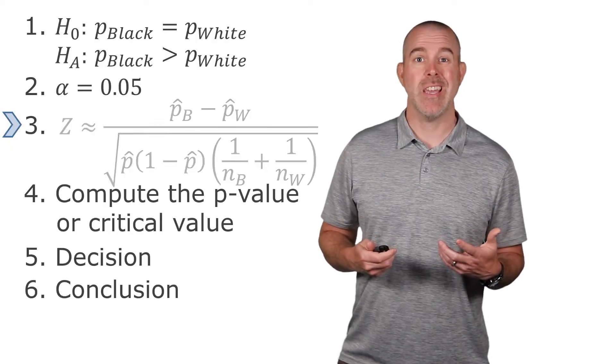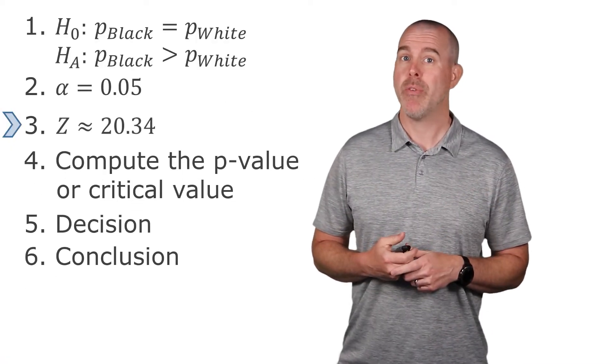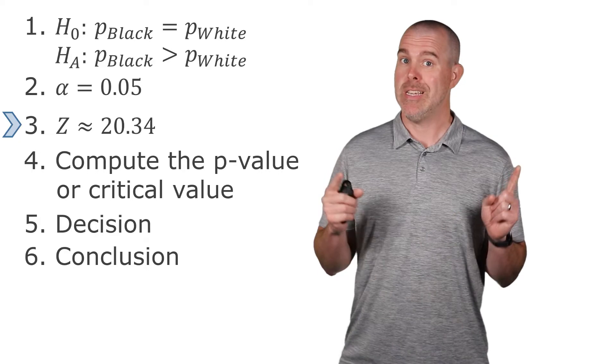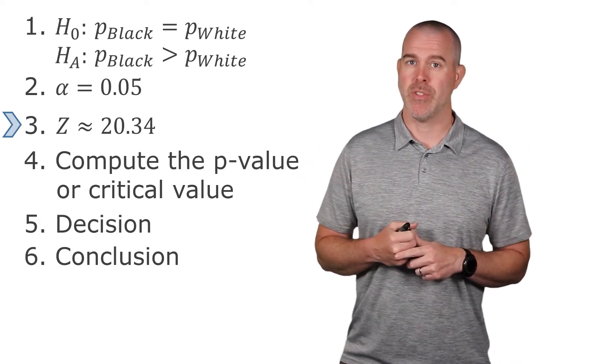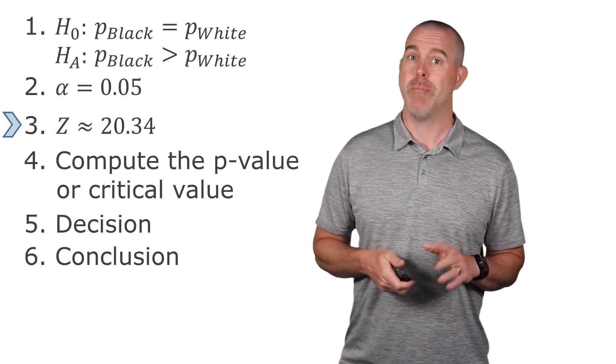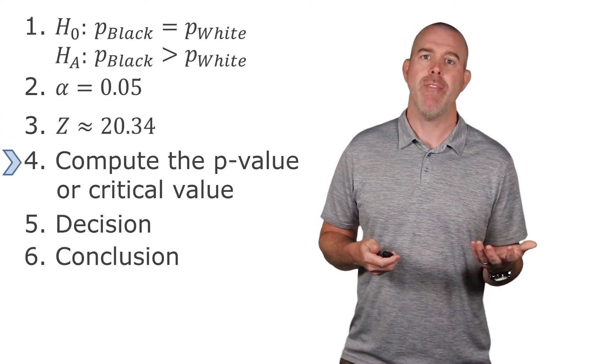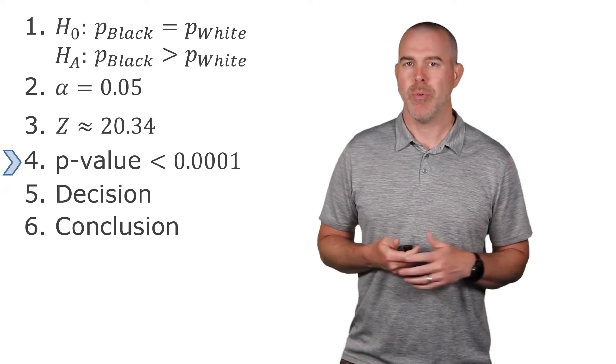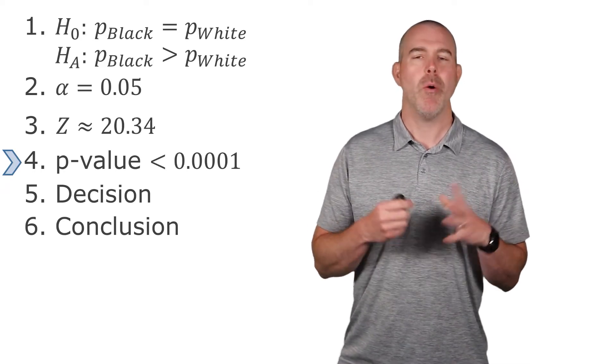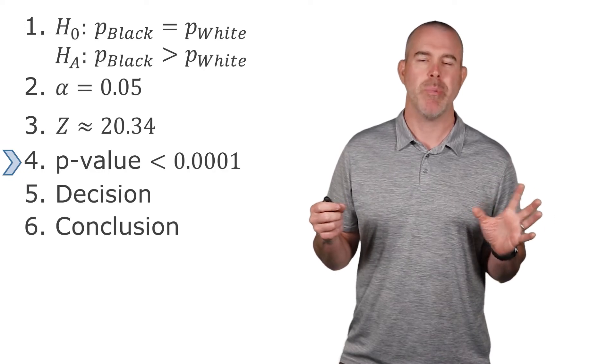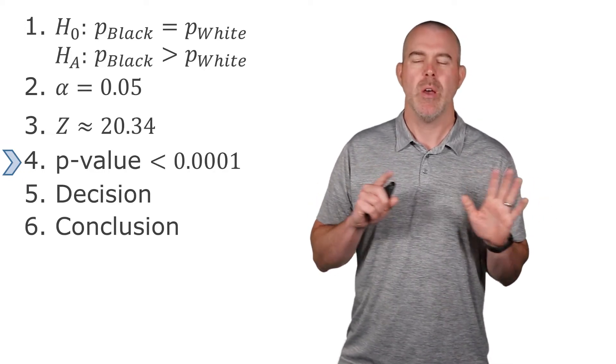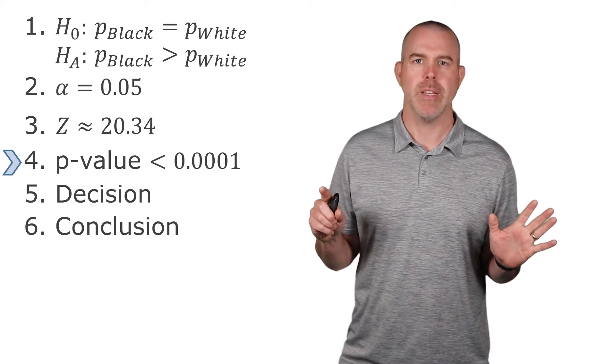Then we can see our z is really big here, 20.34. Remember z's are mostly almost 100% are between negative three and three. That's number of standard deviations. So this is really, really big. That means for our p value, that's going to be less than 0.0001. Remember, we don't put zero here, even though the probability is so small, it's essentially zero, but there's never truly a probability of zero. So we don't go further than four decimal places.